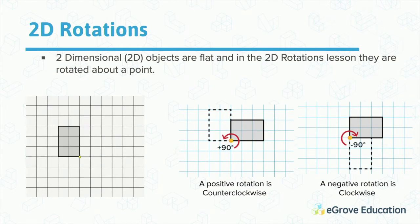Whereas a negative rotation is clockwise, represented as negative 90 degrees. The dotted lines represent the final resting point when you take that object and rotate it either positive 90 or negative 90 degrees.